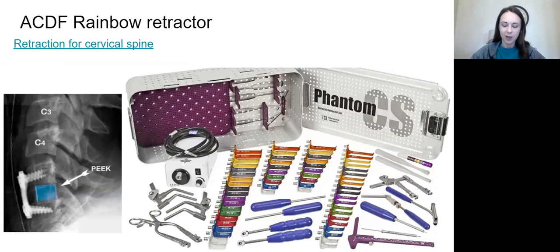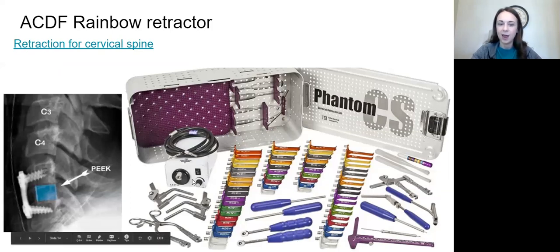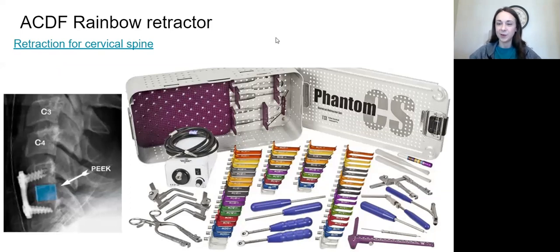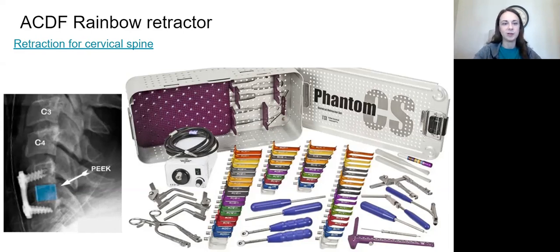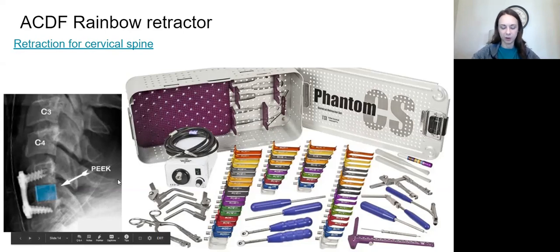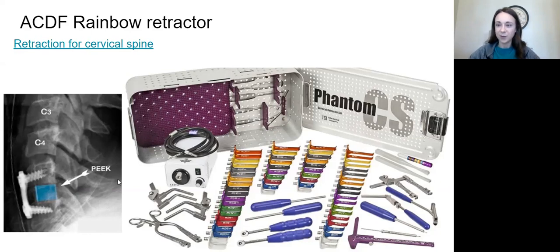Let's focus on the cool instrumentation for ACDF. Equipment, instruments, and supplies: Cloward instruments — you need to be familiar with those. Handheld and self-retaining retractors — there are handheld options with handles and self-retaining options. This is called a rainbow retractor, and different brands exist: Phantom is one, Shadowline is another I used. All of them are called a rainbow retractor, so lump in your mind ACDF with rainbow retractor every time. You'll also see your implant — the cage — and what your plate and screws are going to look like. You'll definitely need a vertebral spreader and a cervical drill with guards.